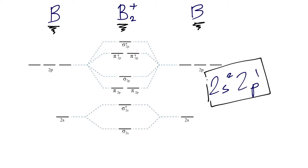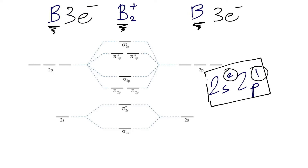By looking at our 2s and 2p orbitals we can see that we have three electrons present within those orbitals. So we'll go ahead and assign three electrons to each boron atom, and these three electrons are going to combine to make our B2+ ion in the center.